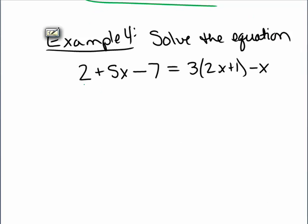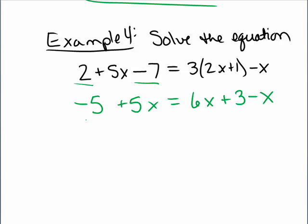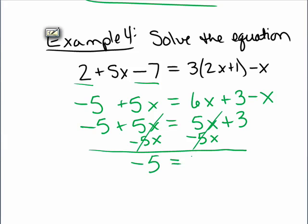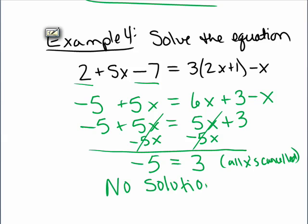In Example 4, I start by simplifying the left side: 2 subtract 7 makes negative 5. On the right side, I distribute to get 6x plus 3 minus x, then simplify: 6x minus x is 5x. So I have negative 5x plus 10 equals 5x plus 3. I subtract 5x on both sides — it cancels on both sides — leaving negative 5 equals 3. All the x's have canceled and I'm left with an equation that is never true. Negative 5 is not equal to 3, so there are no solutions.